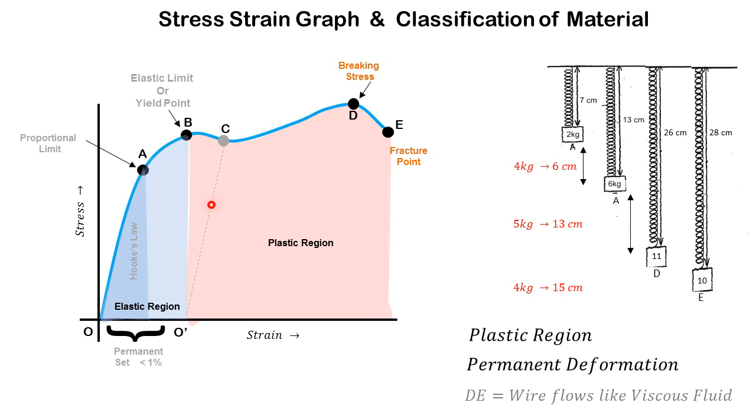In this section BCDE of the graph, the wire behaves in the plastic region. That means it is getting deformed and we find that a small change in stress produces a large deformation or a large strain in the wire.